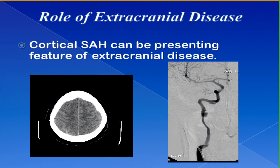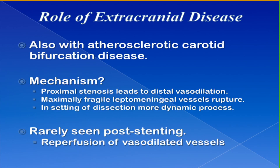I wanted to draw attention to the fact that extracranial processes can also lead to cortical subarachnoid hemorrhage — so the hemorrhages are inside the brain but the vascular pathology may actually be on the outside. A young woman who gave birth and then a couple of days later developed sudden onset headaches had bilateral convexity subarachnoid hemorrhages. Interestingly, she had an extracranial dissection of the carotid artery, quite removed from where the hemorrhages were found. A similar thing can also happen with atherosclerotic disease in the neck — high-grade stenosis can sometimes present with a convexity subarachnoid hemorrhage.